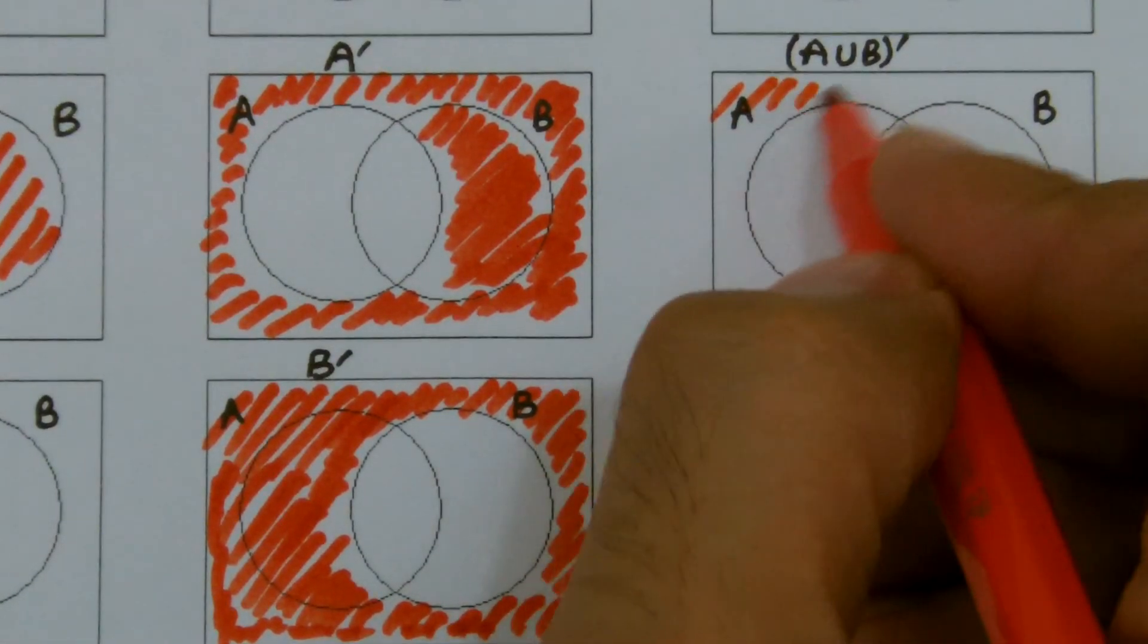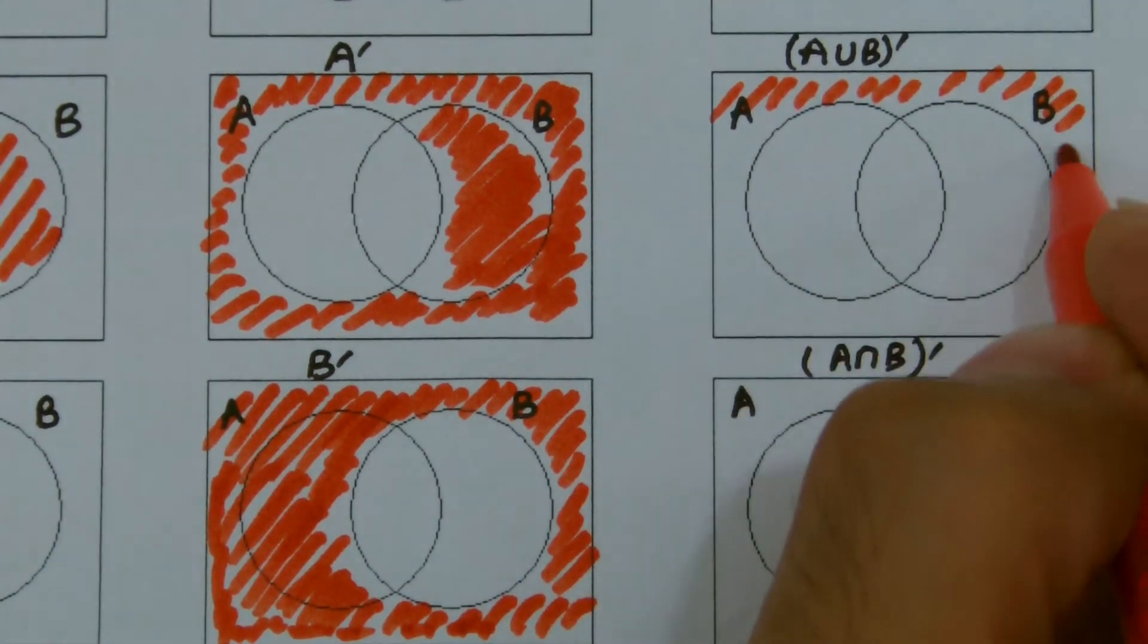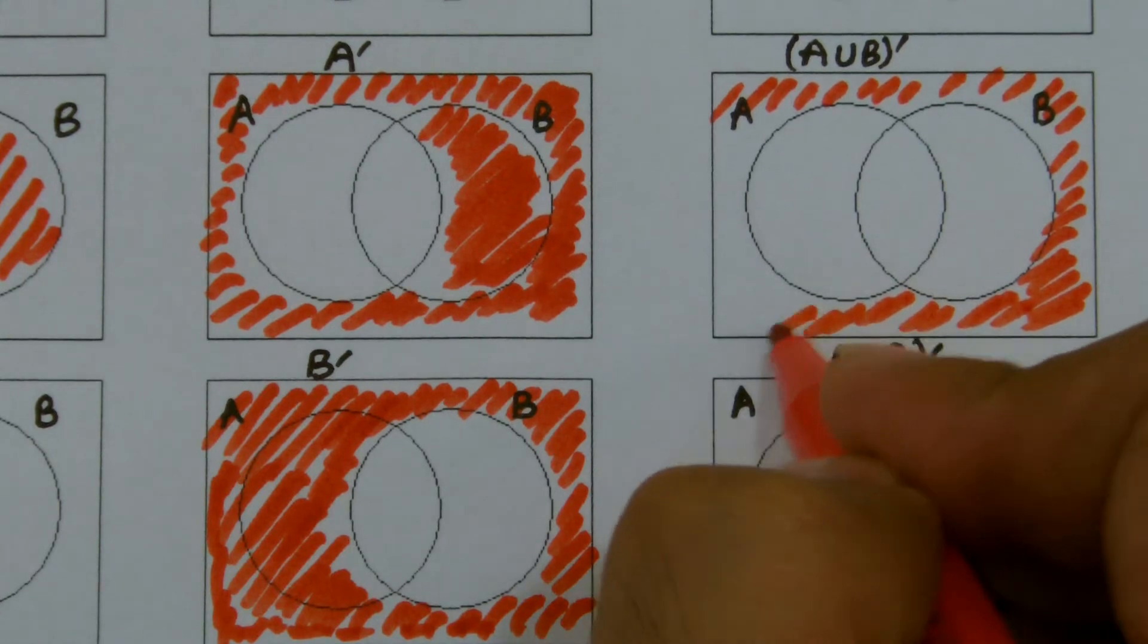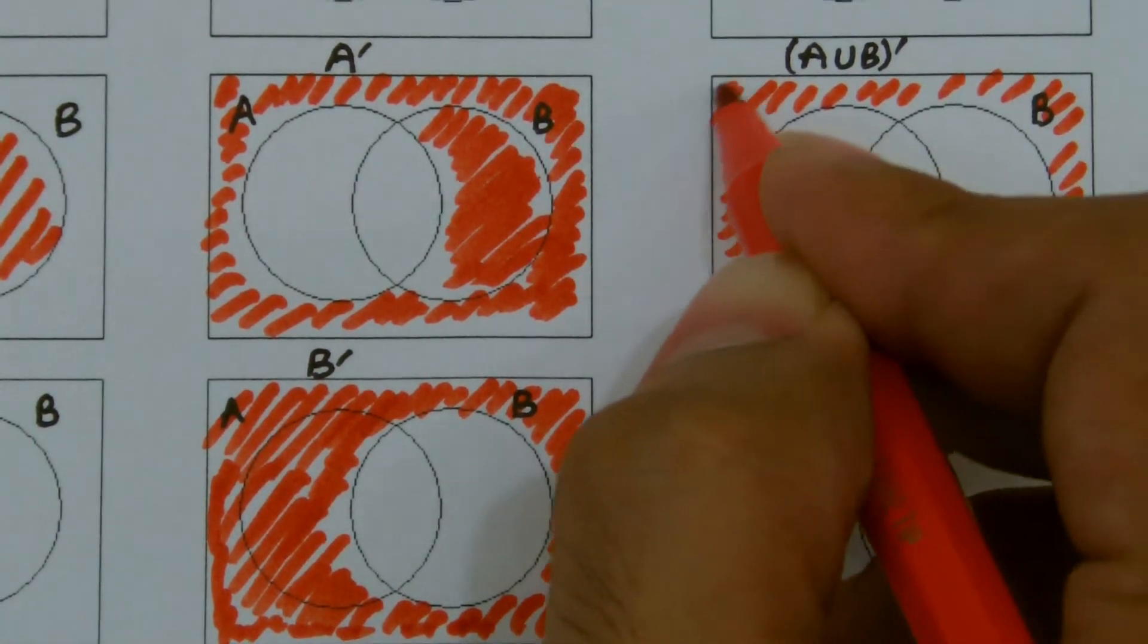Now it means I have to shade everything outside A union B. I'm not looking for A union B but everything outside A union B. And that's how I get A union B complement.